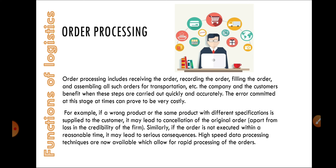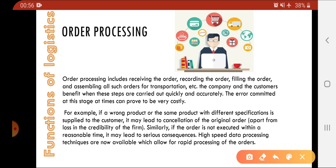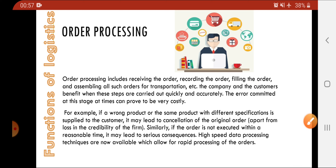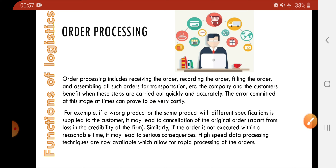The very first function is order processing. In order processing, we firstly receive the order, then we record the order, then we fill the order and assemble all the order details for transportation. In this process we have to ensure that we are ordering accurately and within time, because if the wrong product or the same product with different specification is supplied to the customer, it may lead to cancellation of the original order, resulting in a loss of cost.